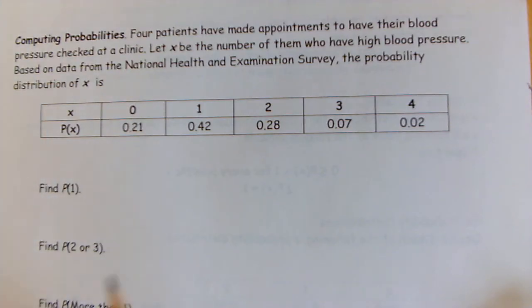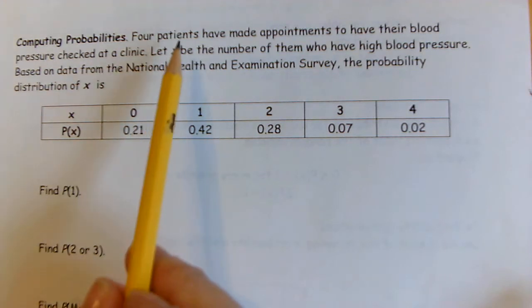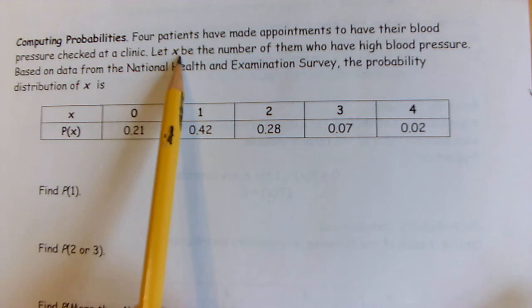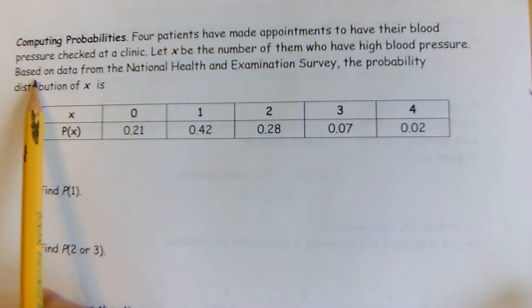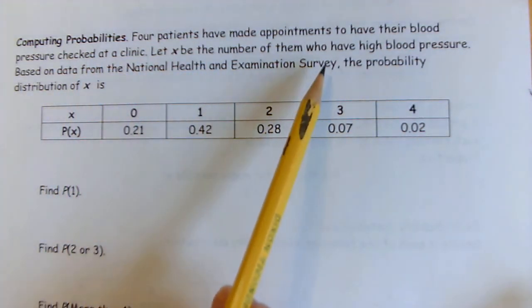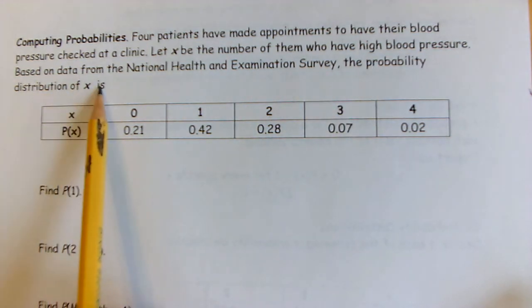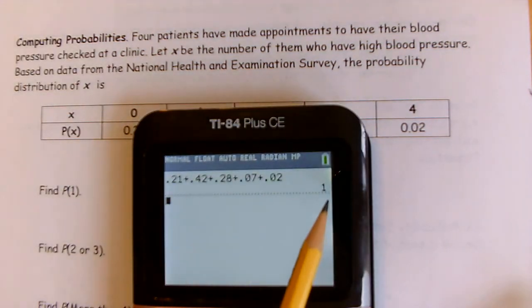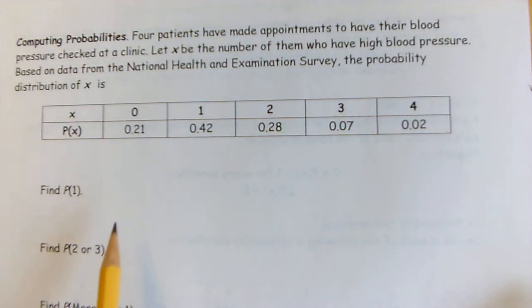Next, you could be given a probability distribution and asked questions about probabilities. For example: four patients have made appointments to have their blood pressure checked at a clinic. Let X be the number of them who have high blood pressure — none, one, two, three, or all four. Based on data from the National Health and Examination Survey, the probabilities are given. This is a valid probability distribution — it all adds up to one.